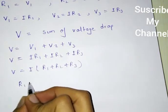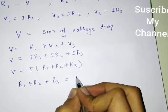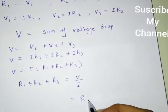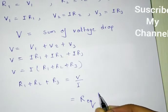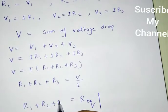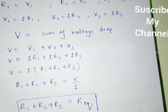R1 plus R2 plus R3 equals to V by I, and V by I equals to R equivalent. So R equivalent is R equals to R1 plus R2 plus R3.